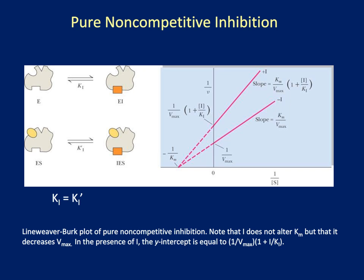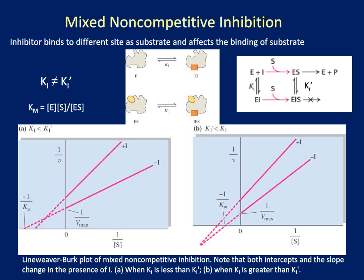A pure non-competitive inhibitor binds to both the enzyme and enzyme-substrate complex, and binds to a different region of the protein than the substrate does. Thus, the Km of the substrate doesn't change, as the inhibitor is not interacting with that region. Yet it does inhibit the turnover of the enzyme, and thus changes the Vmax. Mixed non-competitive inhibition is similar in that the inhibitor can bind to the enzyme or the enzyme-substrate complex, but the inhibitor has a different affinity for each of the complexes — Ki for the enzyme is different than Ki for the enzyme-substrate complex. They are not equal.